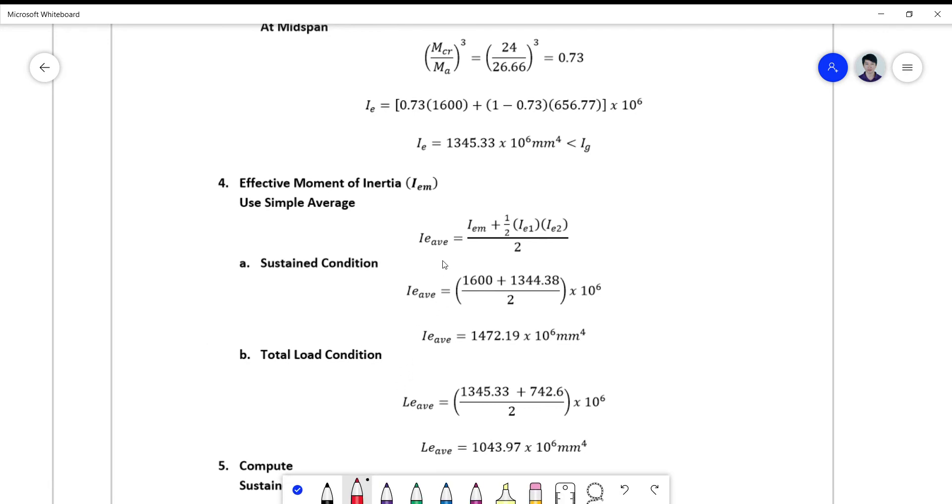So we just take the effective average: IEM plus one-half IE1 plus IE2 all over 2. So this is plus. There's an error again here. It's plus.